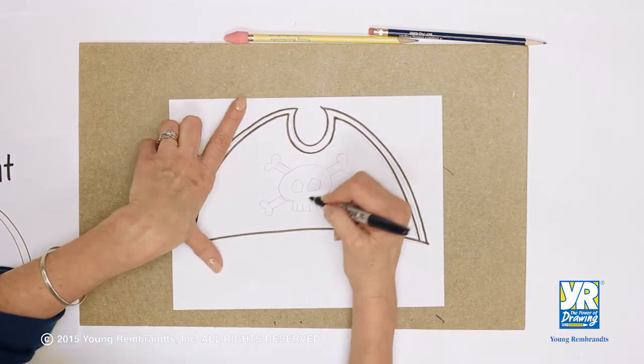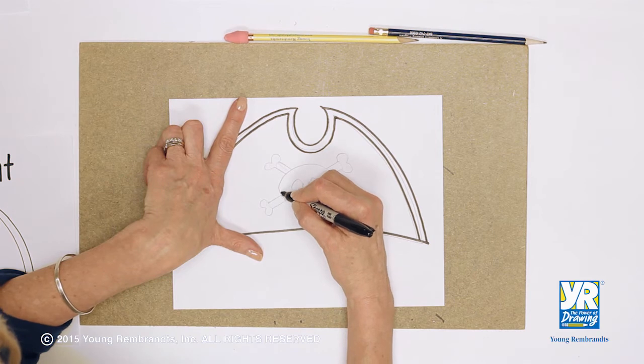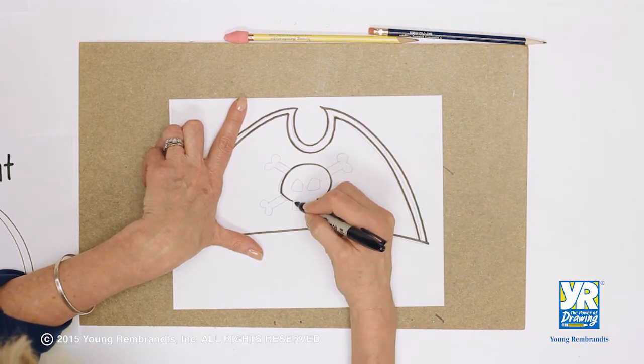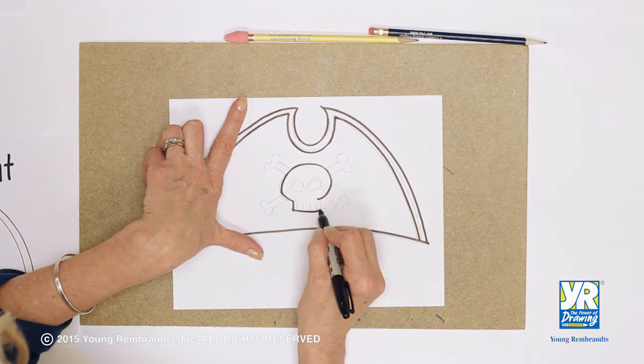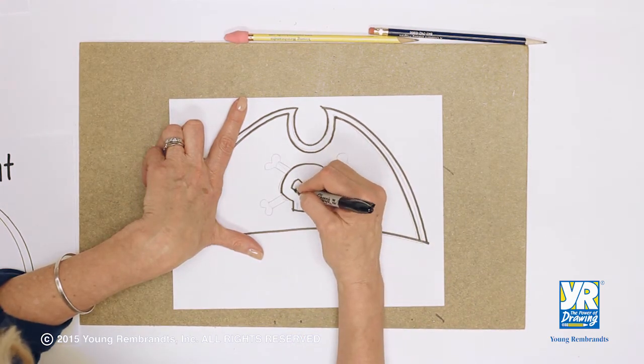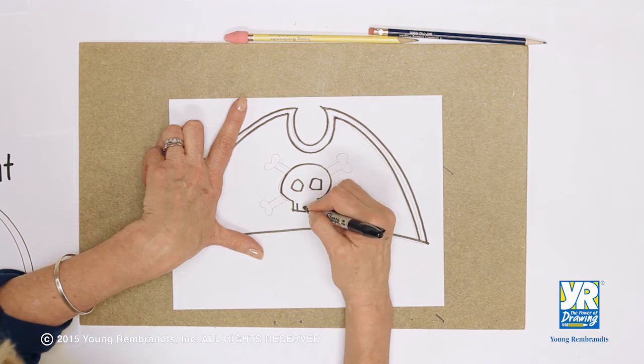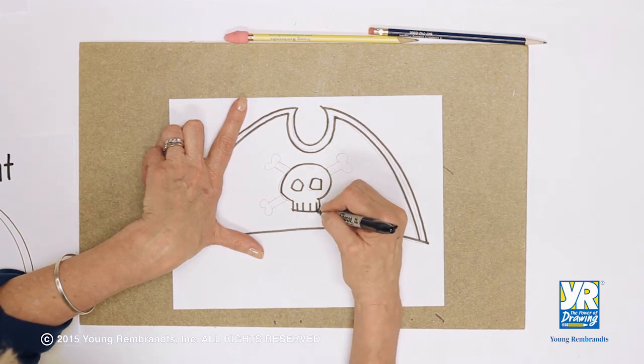Now we're going to trace our skull and crossbones. So we just trace the big shape of the circle. Don't close it up this time. Down, cross. Draw those kind of eyes. They're not really eyes. They're like the sockets where the eyes used to be.